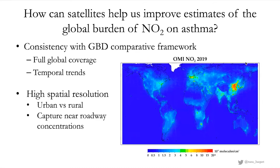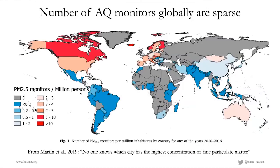The number of surface monitors is quite sparse globally. Looking at PM2.5 monitors per million people — and NO2 numbers are probably similar if not worse — many countries have on the order of one monitor per million people, and several have fewer or even zero. This really shows why satellite data can be used to fill in the gaps. Even countries like the US and Canada, which have relatively high monitor density compared to the rest of the world, still have hundreds of kilometers without data, so satellite data is very helpful.